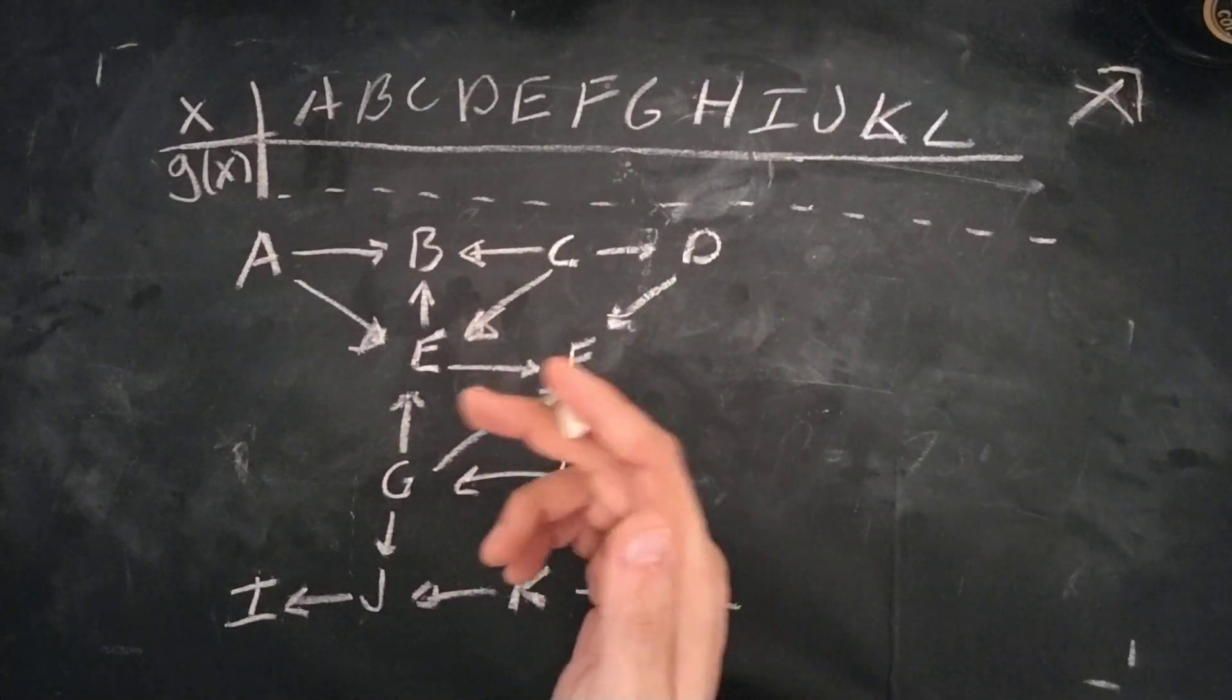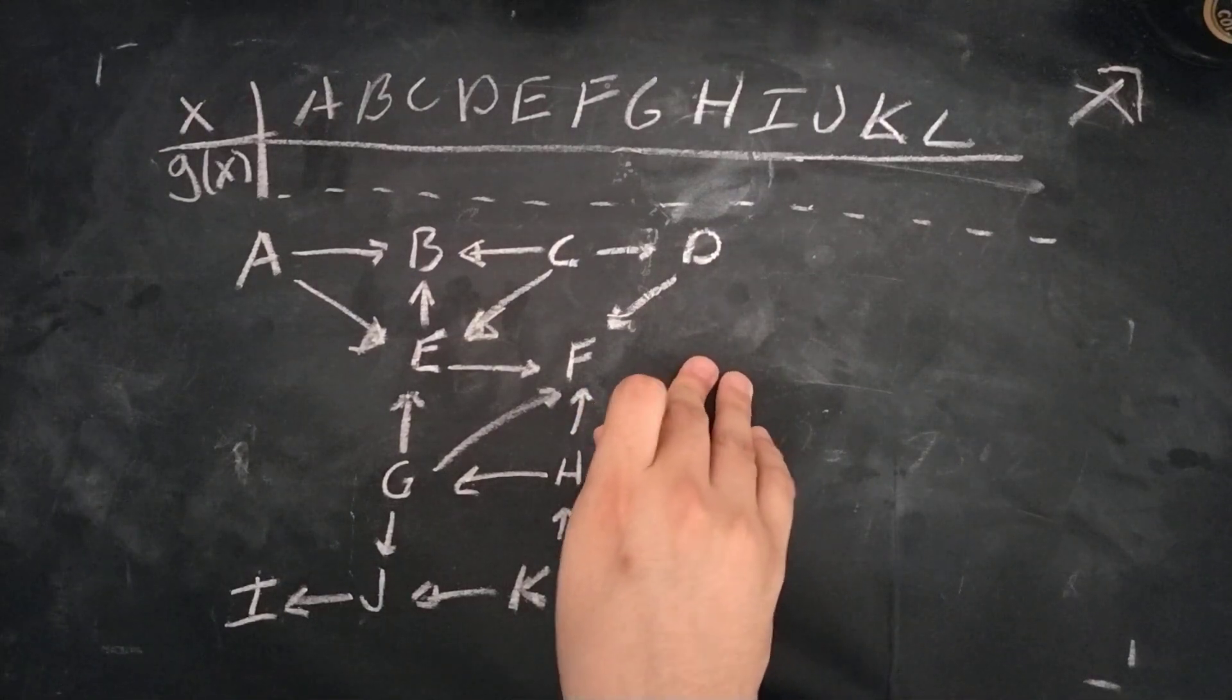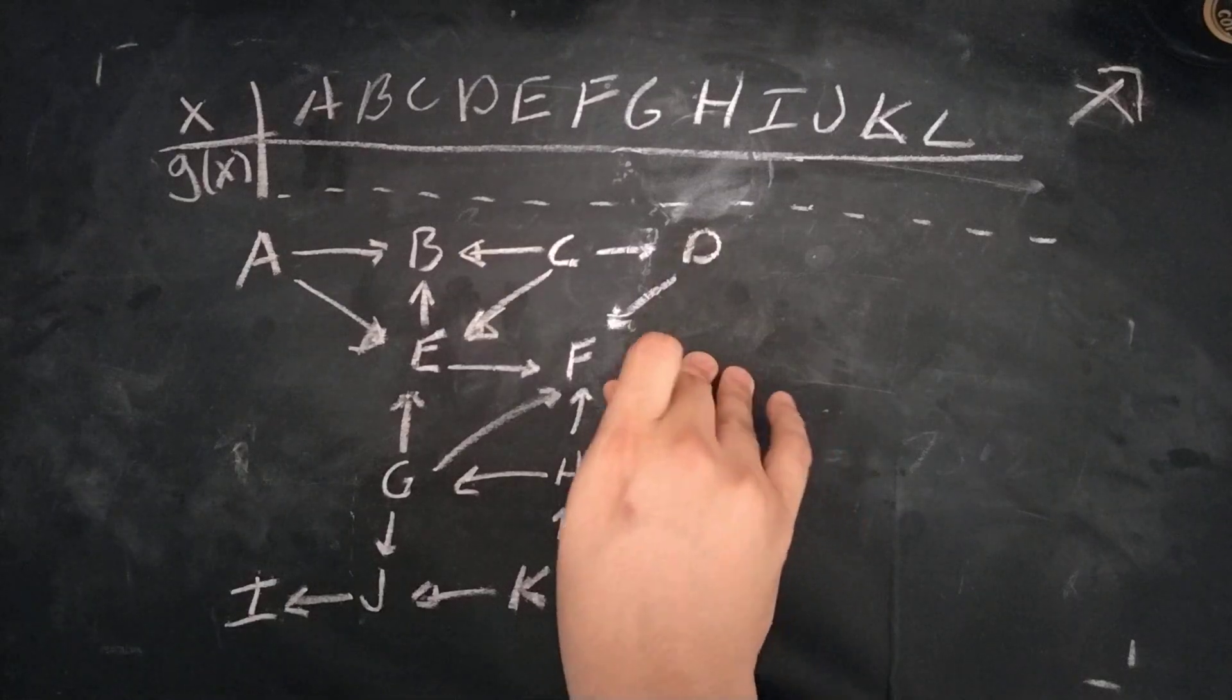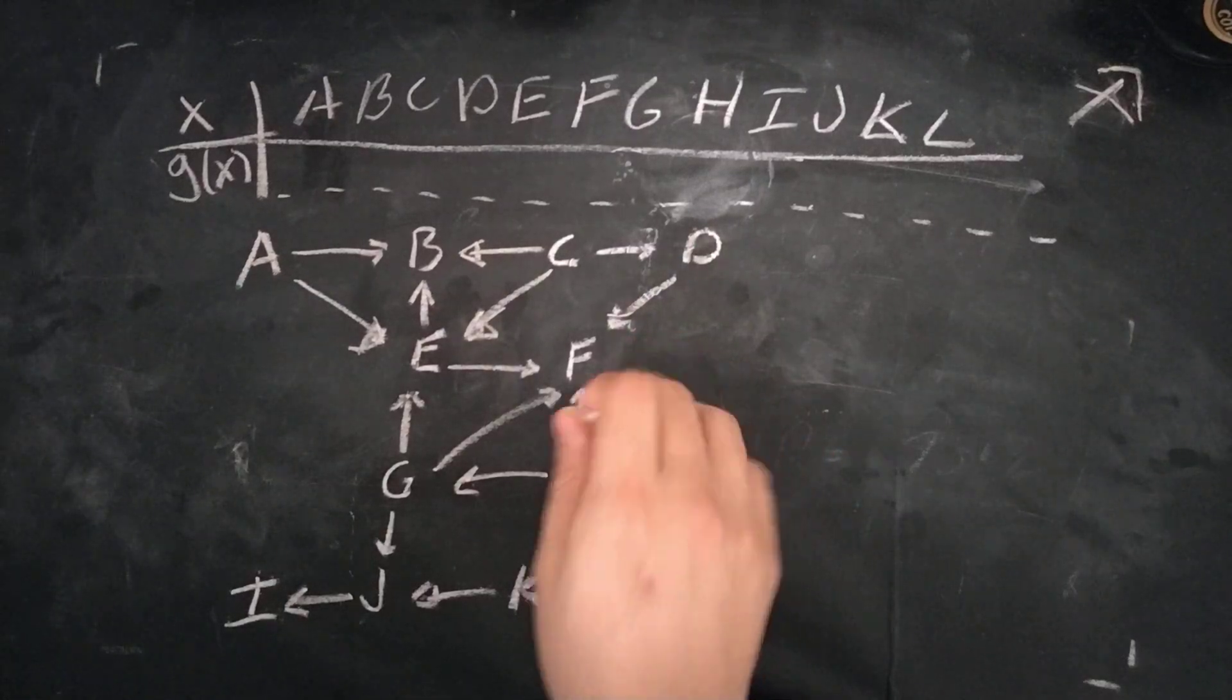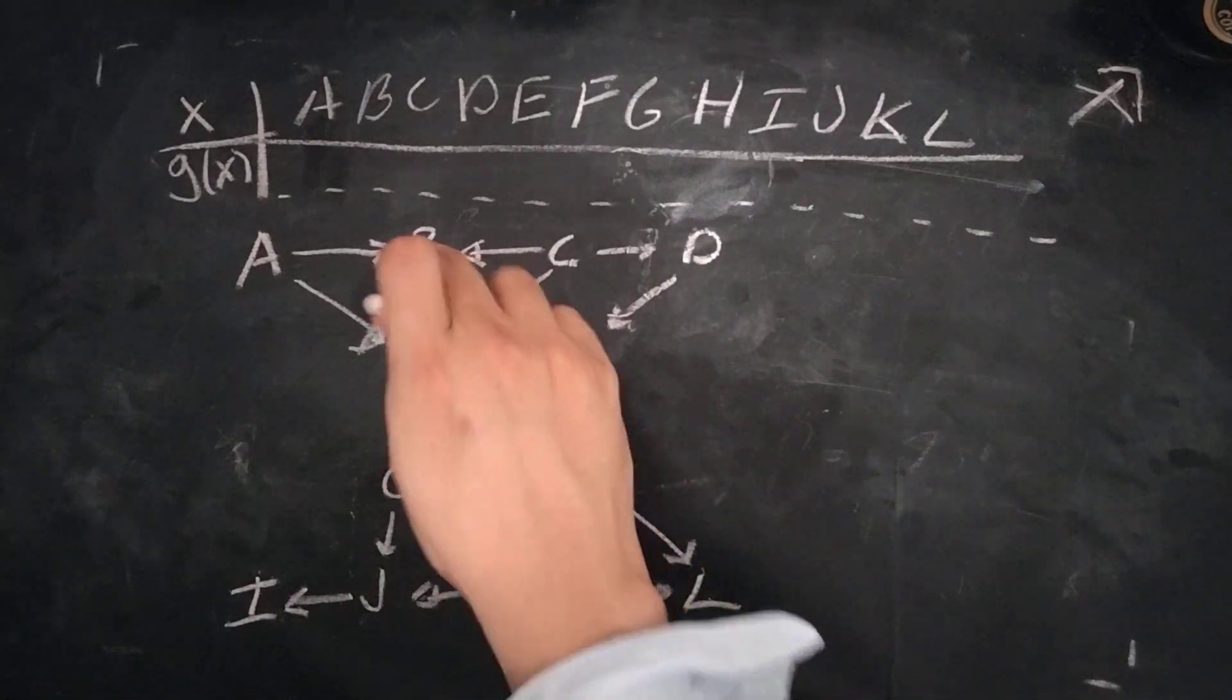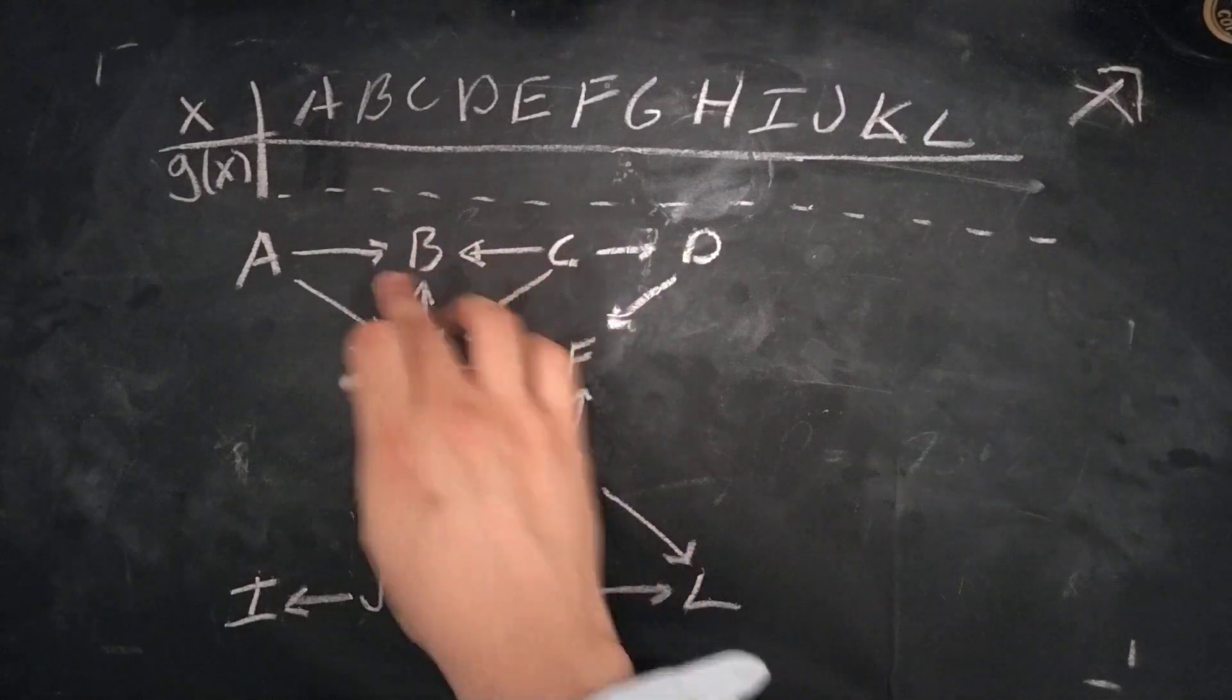So in this case, to find the Sprague-Grundy value, the way it works is you first want to find the points in which you know for a fact you lose the game. So those points are B, since once you're at B you can't go anywhere else.